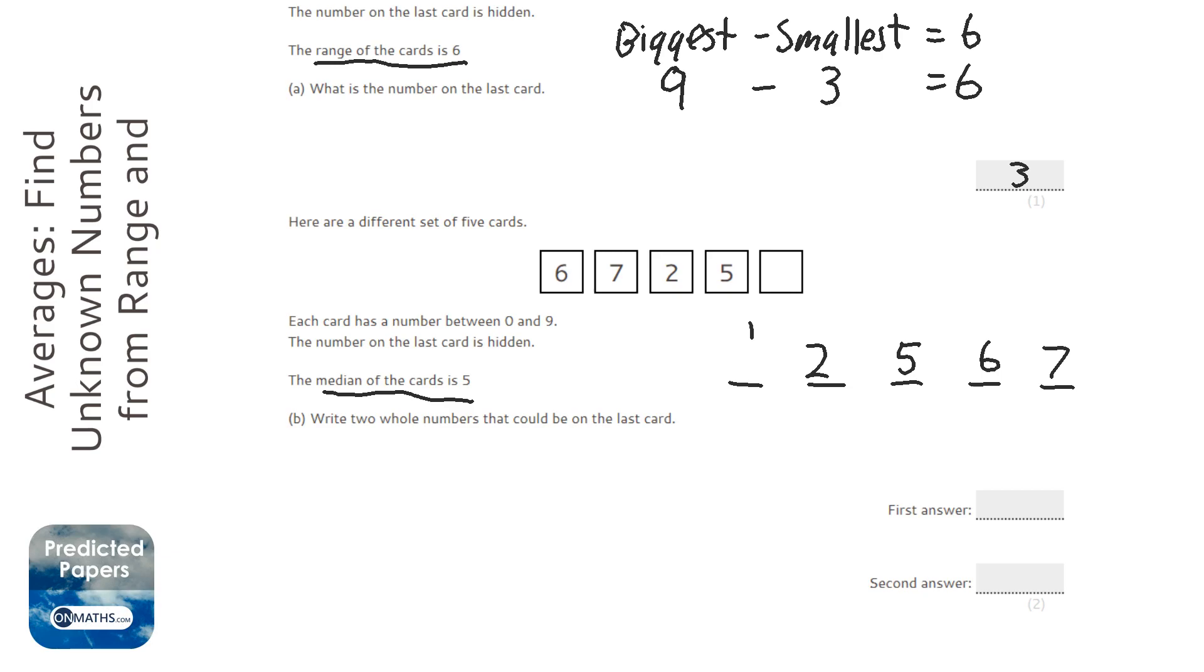on here, and that would make the median five. Remember, the median needs to be five, and these numbers here are given to us, so they're pretty much locked in. We could have a zero, okay, that would make complete sense, or the two could be here.